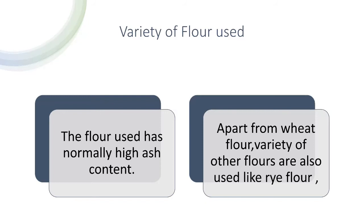Low protein content flours are usually darker and have a higher ash content, resulting in a fuller flavor. Also, the higher mineral content is beneficial to the long and slow fermentations which are favored for artisan breads. Apart from wheat flour, some other flours can also be used while making artisan breads, like rye flour, bran, or coarse flakes.